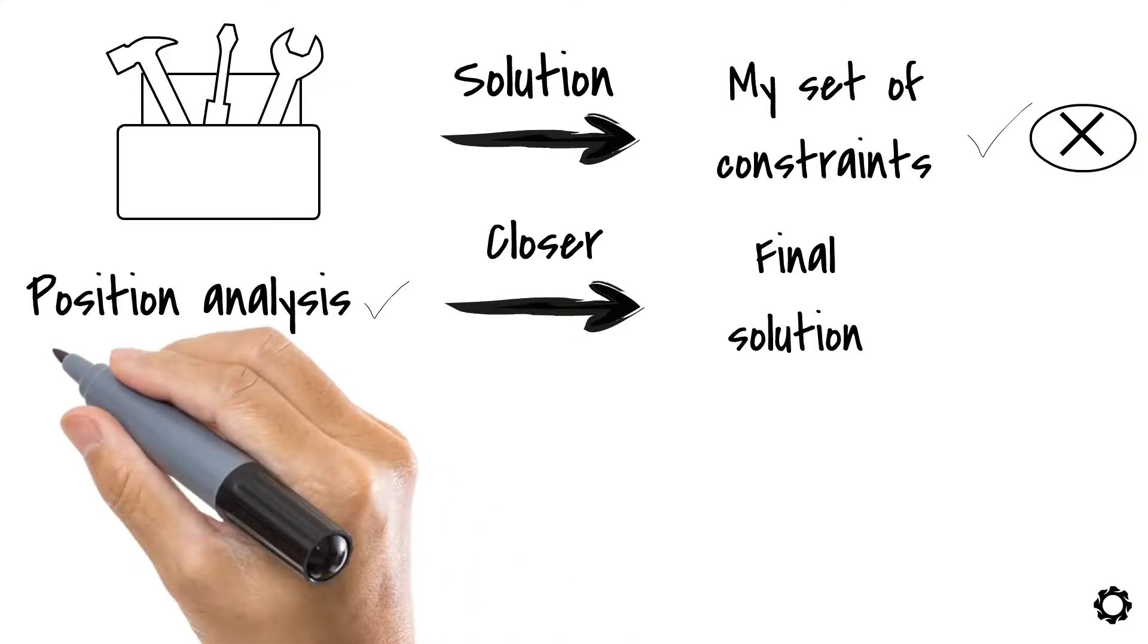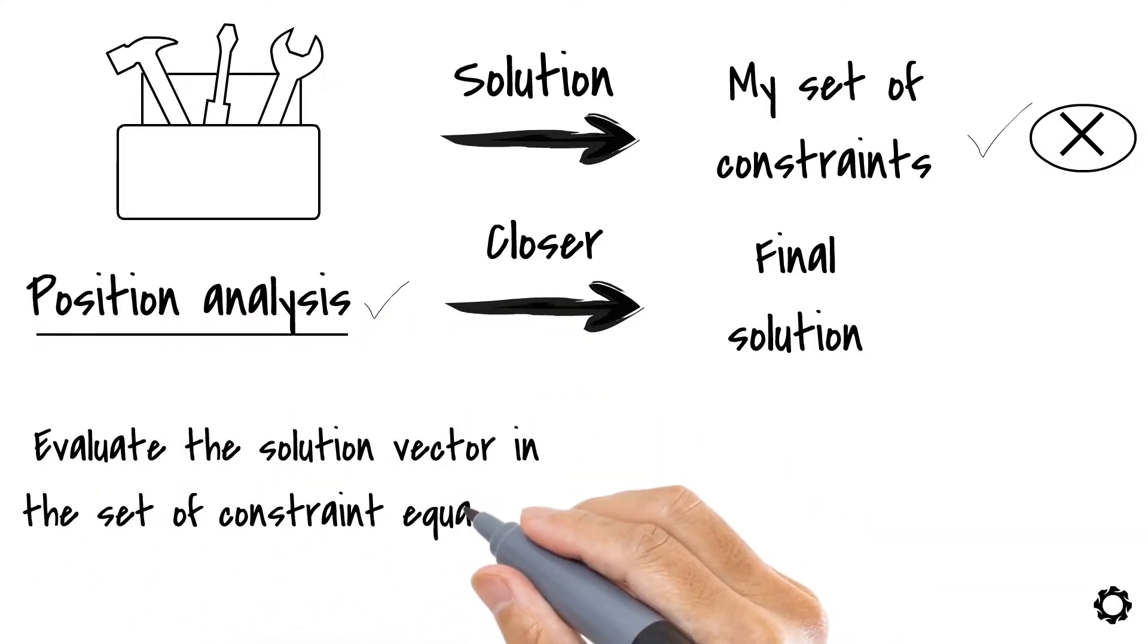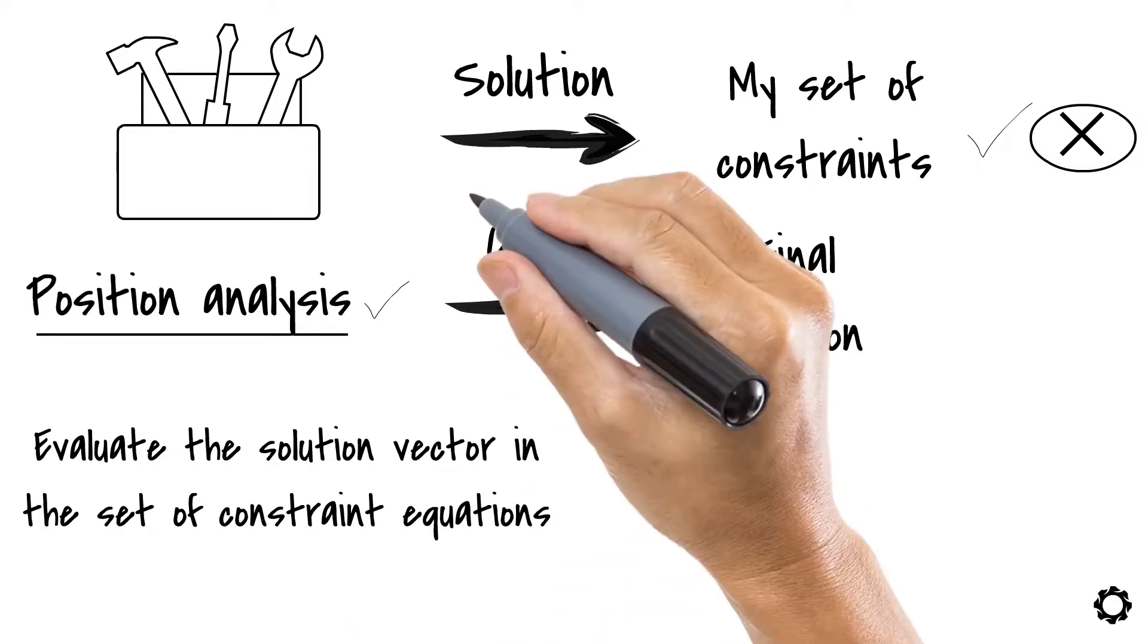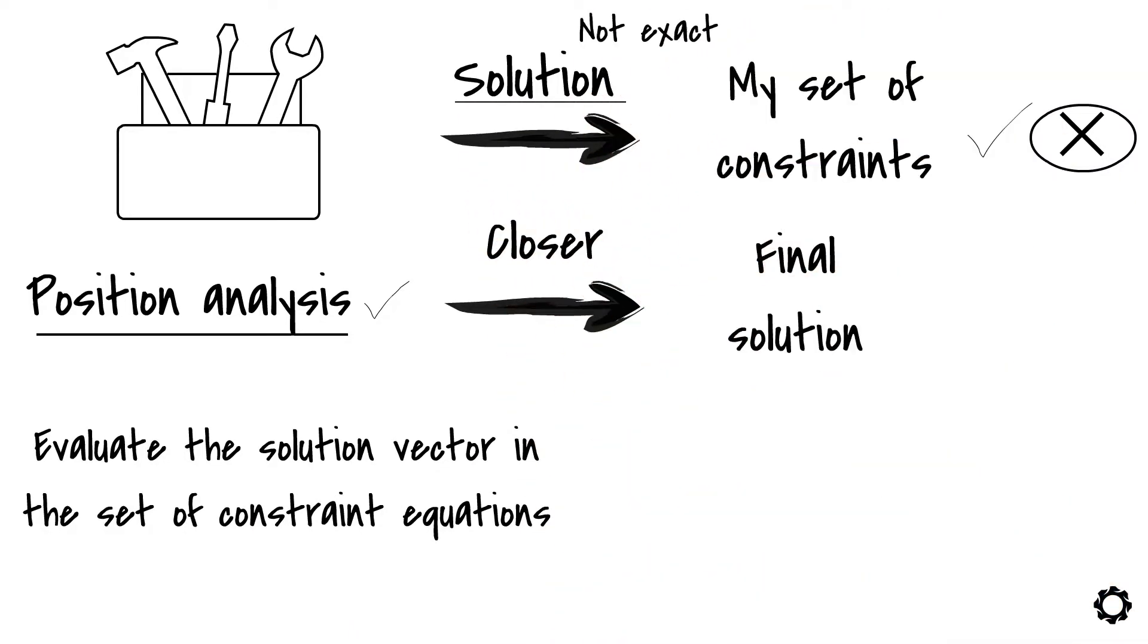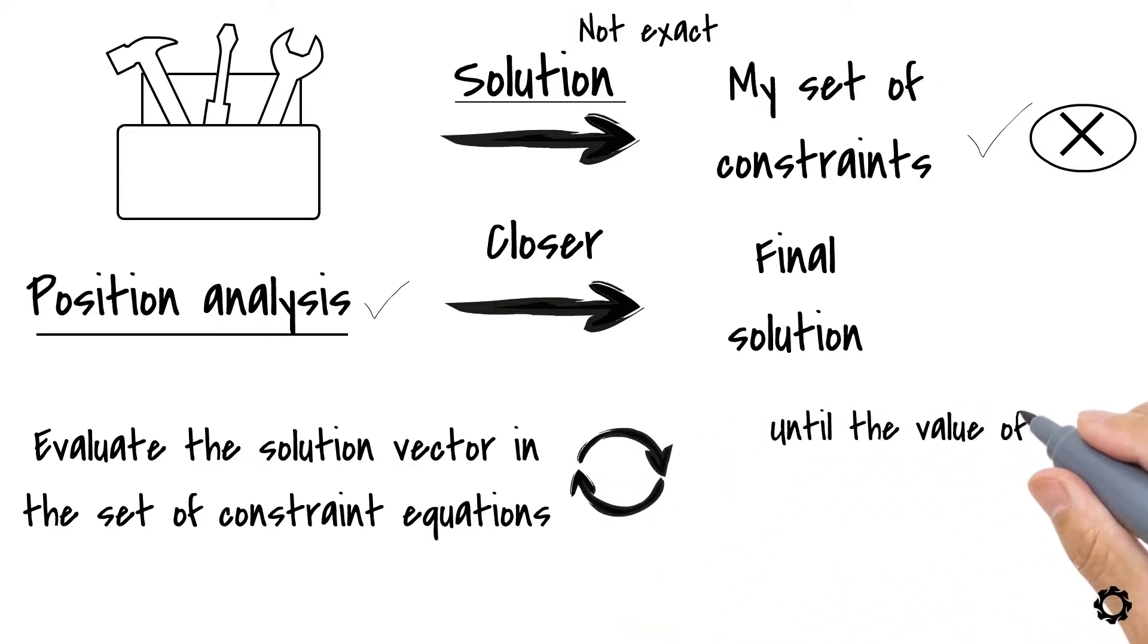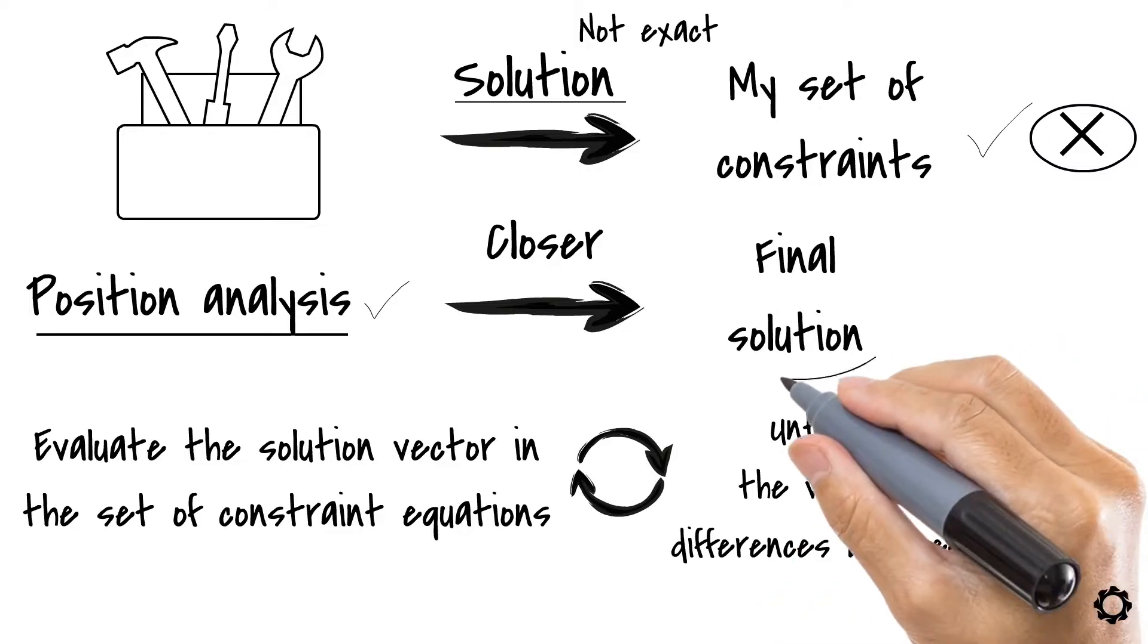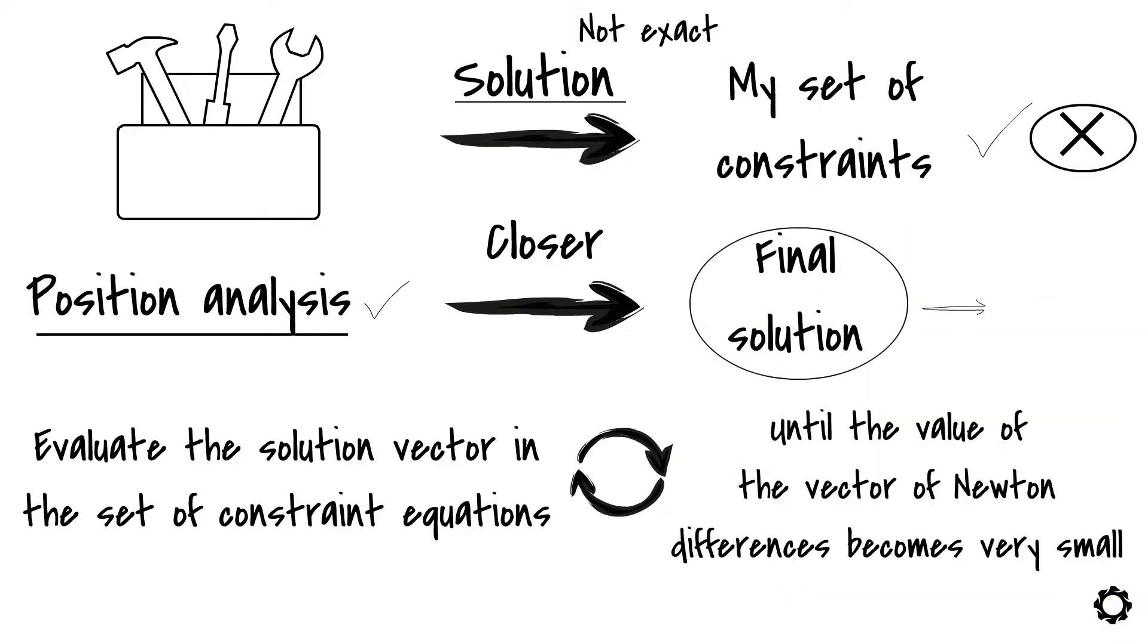You see, once you've applied this step, you could evaluate the solution vector in the set of constraint equations. And you'll notice that the solution is not exact. You'll need to repeat this process over and over again until the value of the vector of Newton's differences becomes very small and until the solution evaluated gets very close to its real value, which in our case is zero.